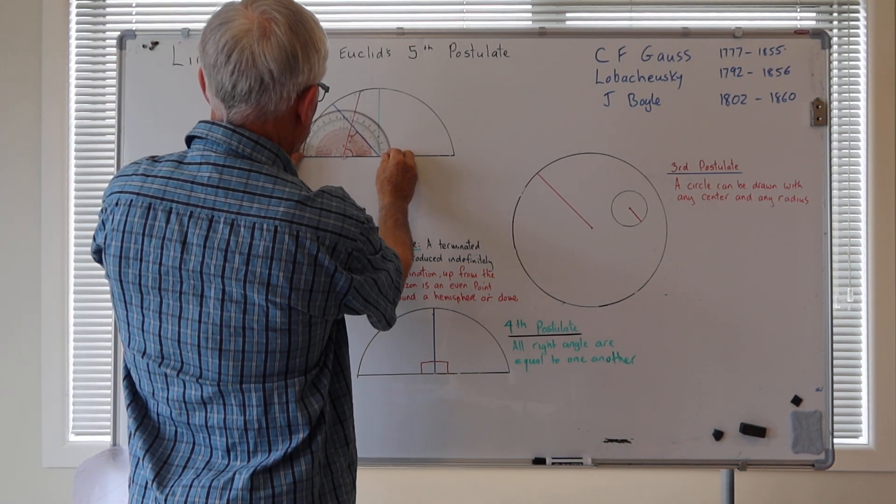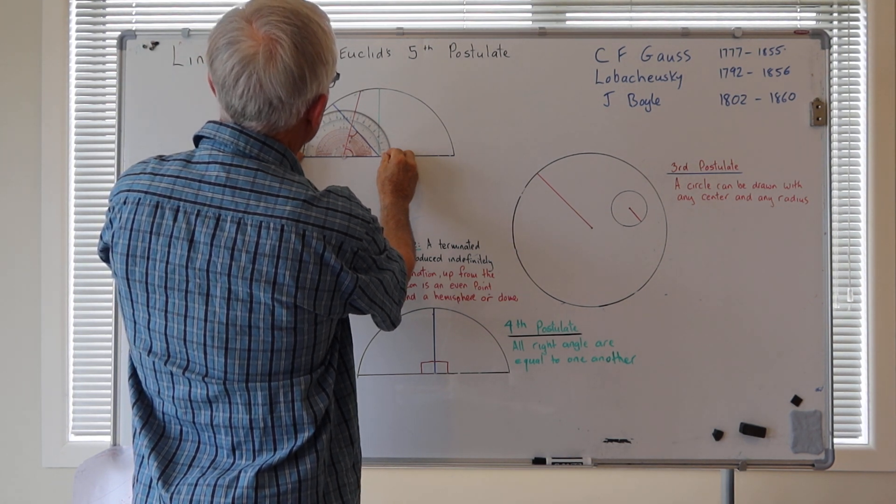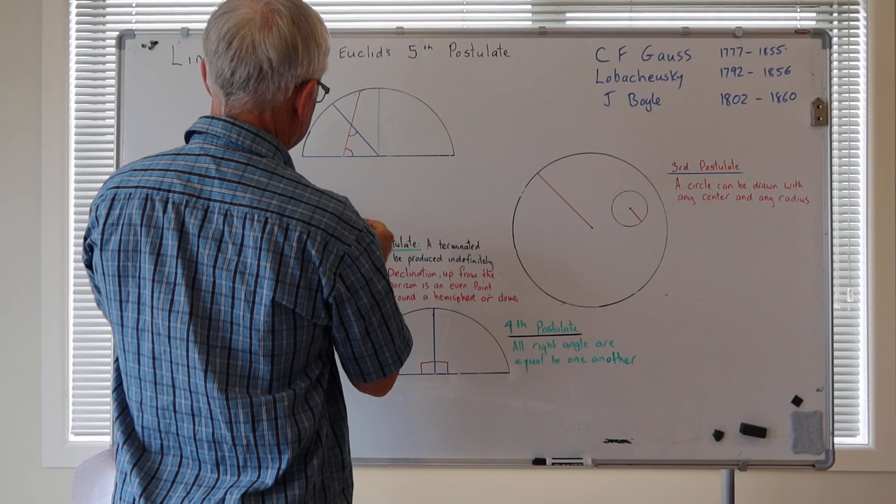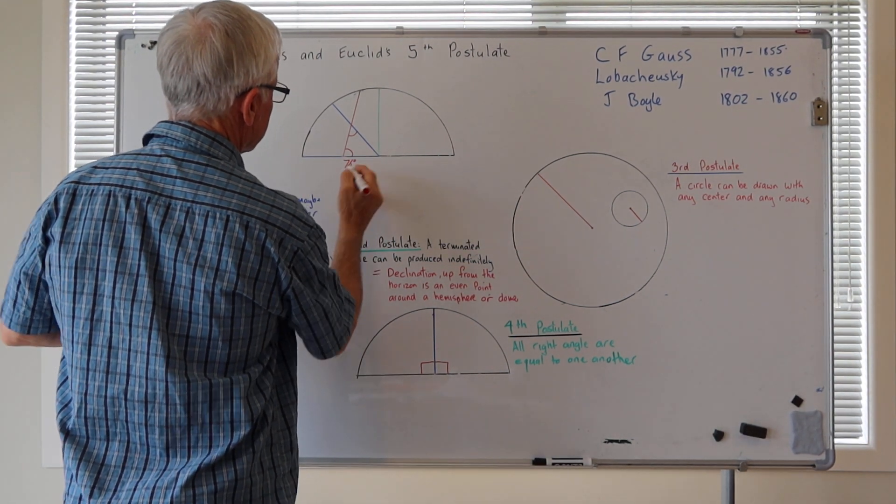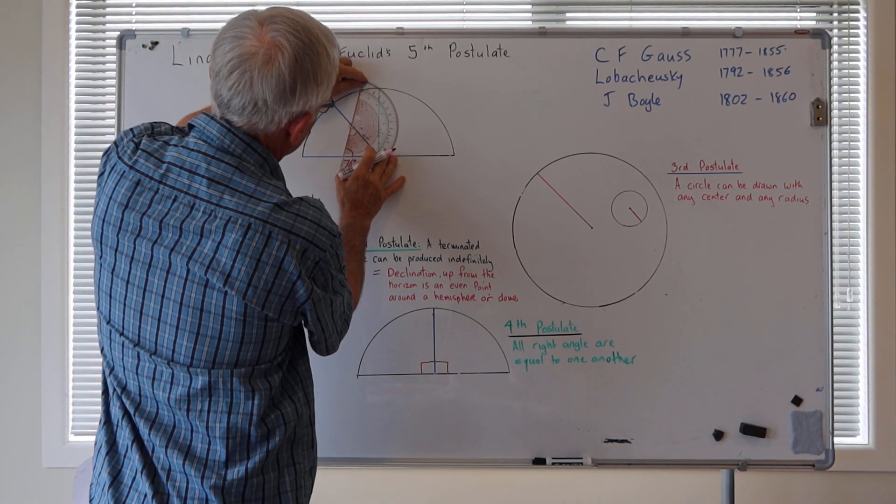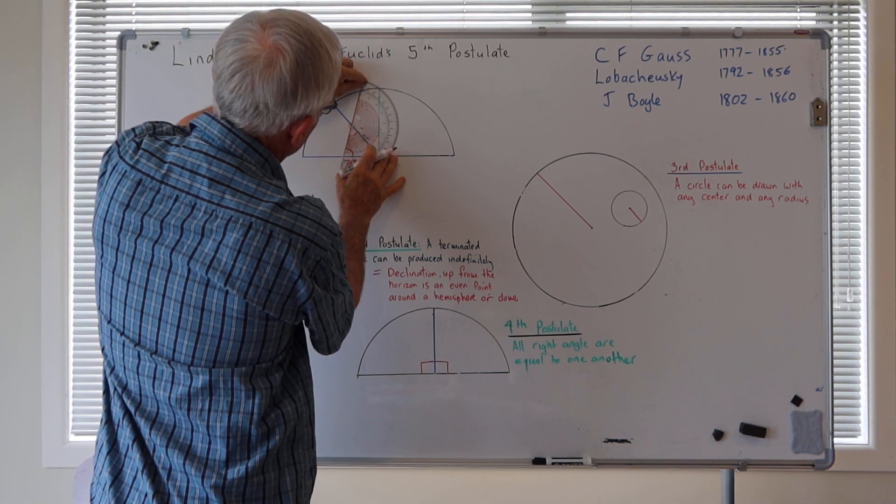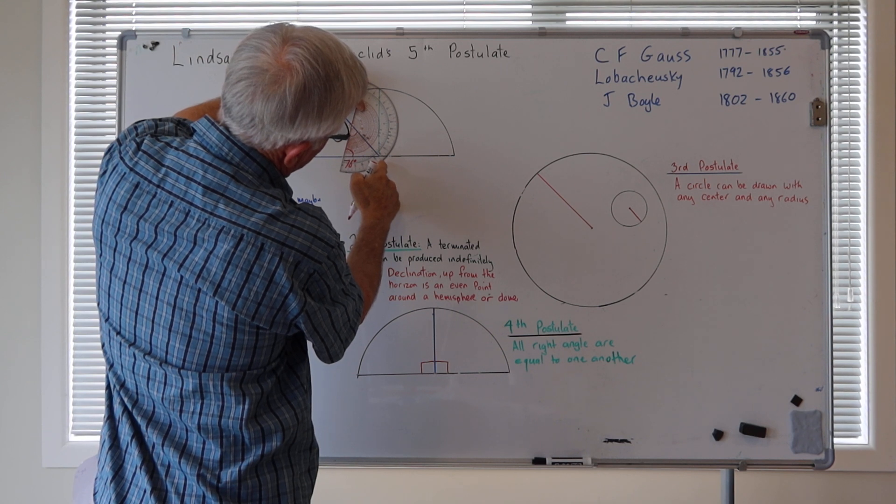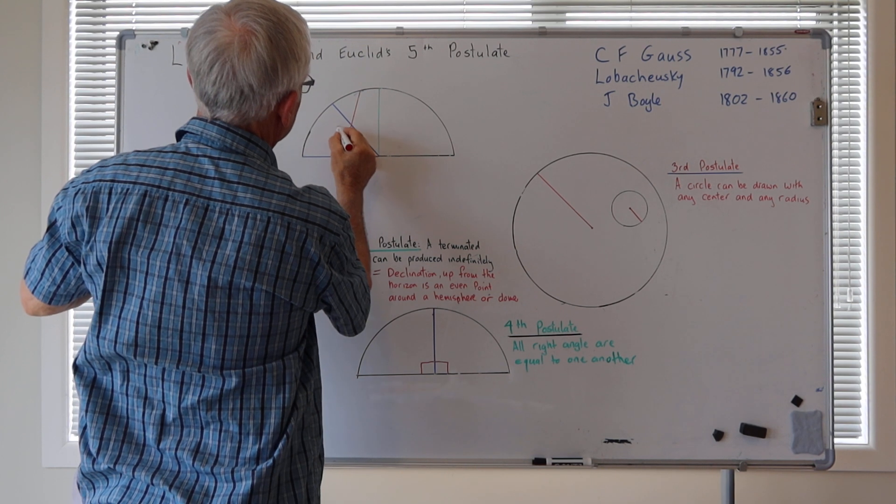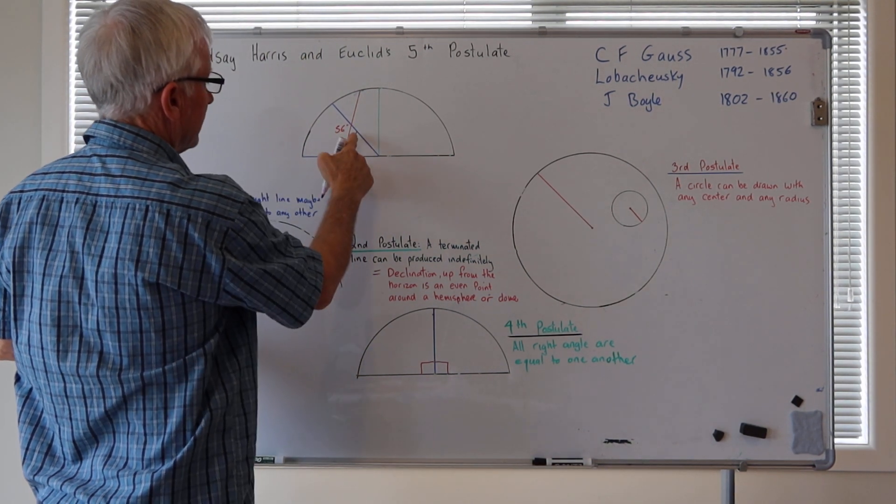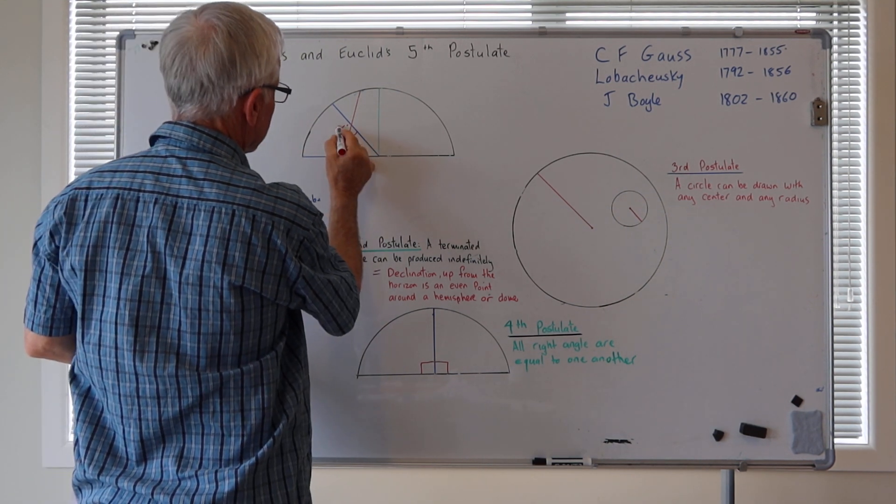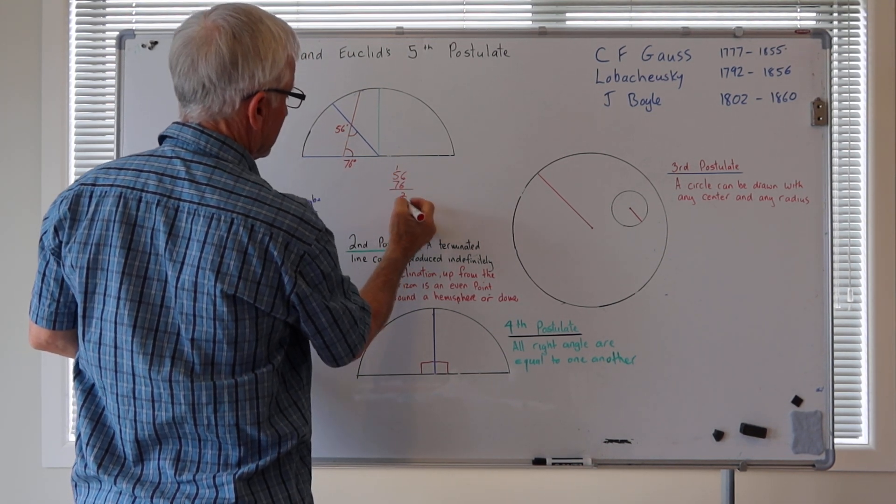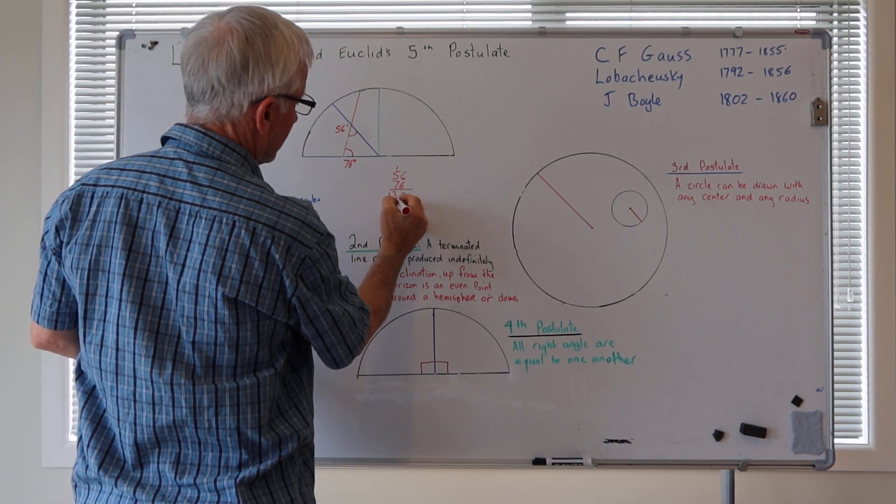What have we got? We have 76 roughly, 76 degrees. This is 76 degrees. And this one here is 55, 56, let's say 56 degrees on the same side. Okay, so we got 56 and 76 equals 132.